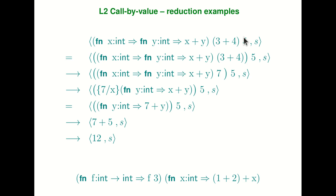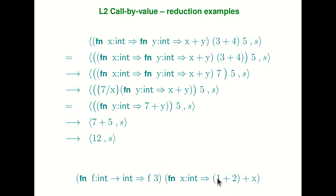Application is left associative — once you have the syntax tree you don't need to worry about associativity, but when reading programs as a human it's helpful to remember. Higher-order functions work exactly the same way — there's no difference between passing a number and passing a function as an argument. If we have a higher-order function Fn f goes to f applied to three, with function type int to int, and give it Fn x goes to 1 plus 2 plus x — since functions are values, we can do the substitution immediately. We get Fn x goes to 1 plus 2 plus x applied to three, and one more substitution gives a pure arithmetic expression that evaluates to six.